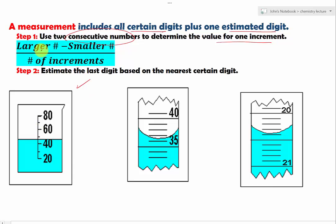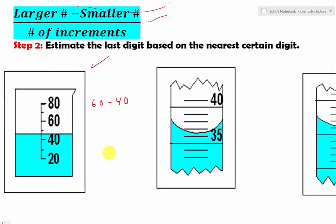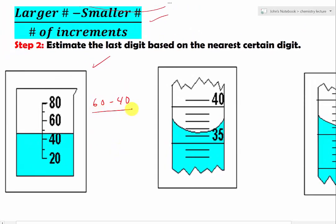All you have to do is use this formula right here. We take the larger number minus the smaller number divided by the number of increments. So 60 minus 40 and divide by the number of increments, which is 1 and 2. 60 minus 40 gives you 20, and 20 divided by 2 gives you 10. So each one of this little space right here is actually equal to 10.